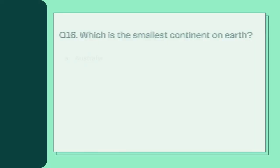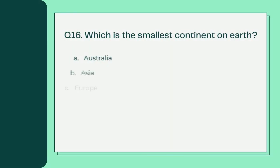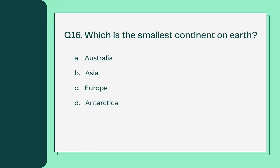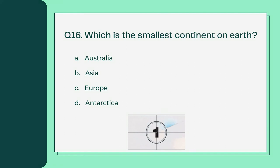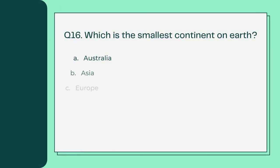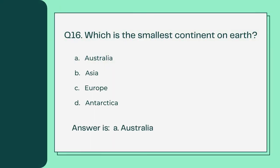Which is the smallest continent on Earth? A. Australia B. Asia C. Europe D. Antarctica. Answer is A. Australia.